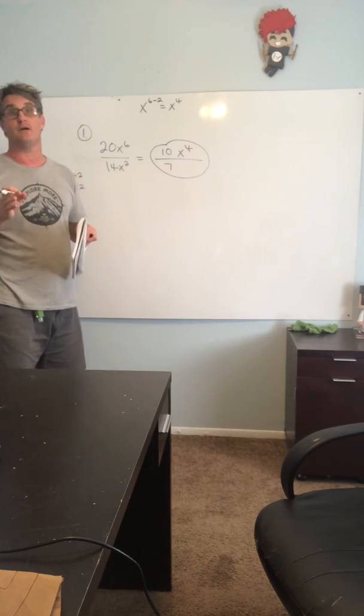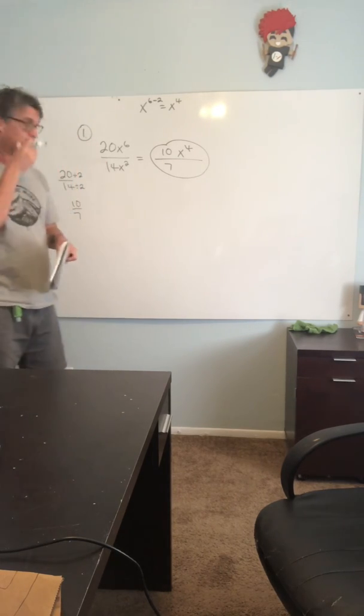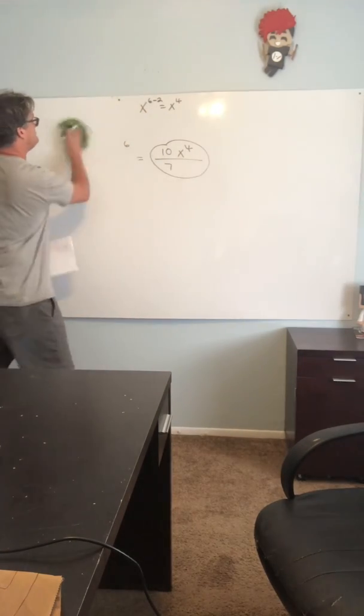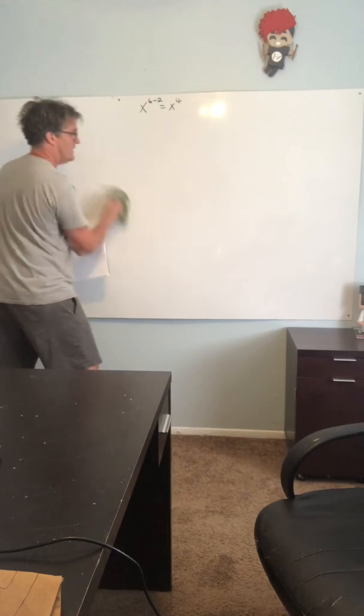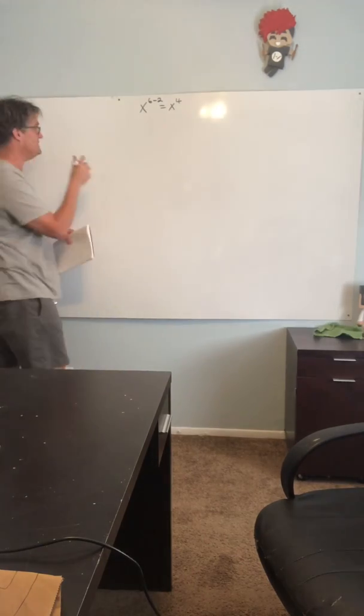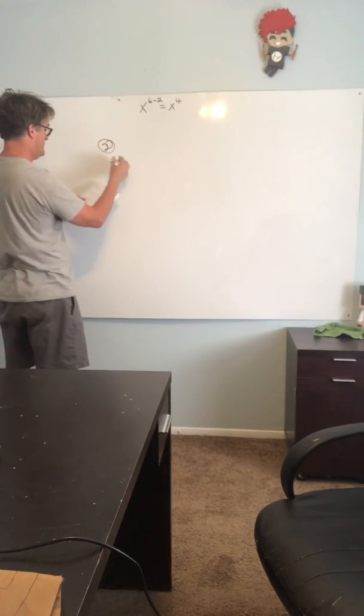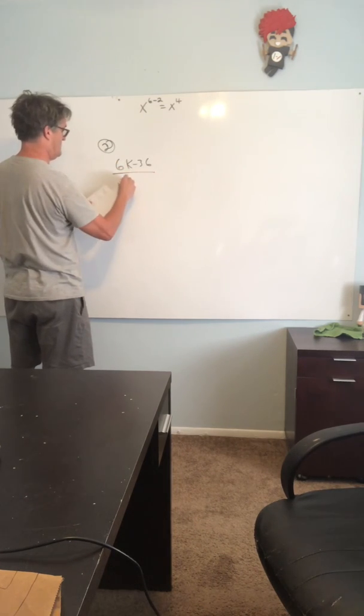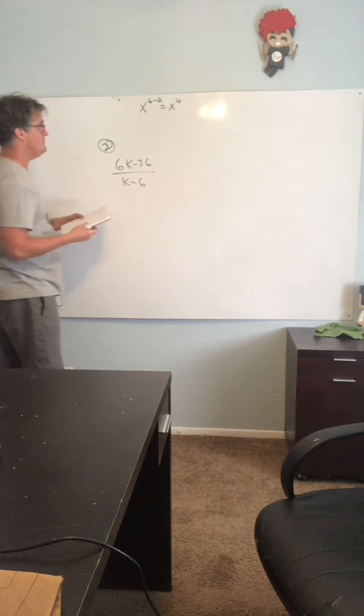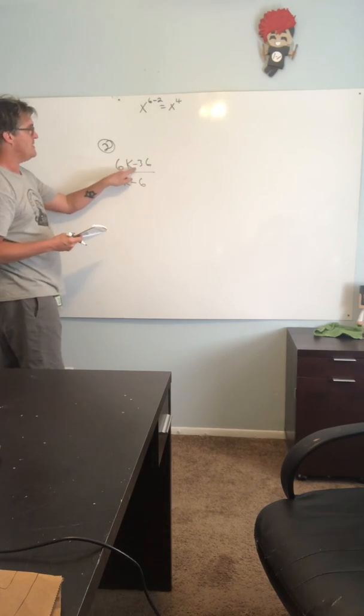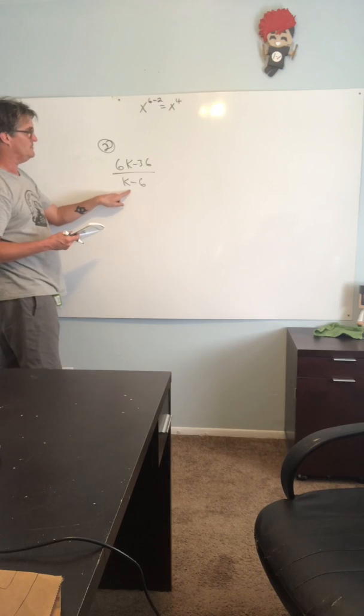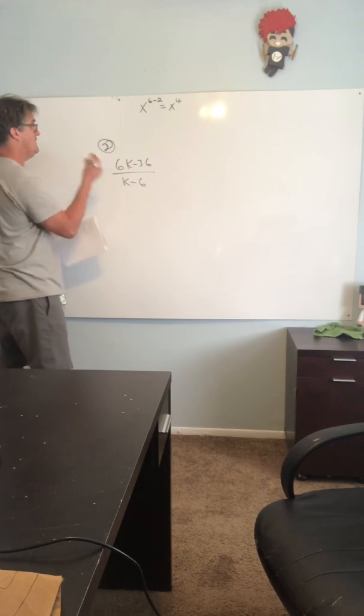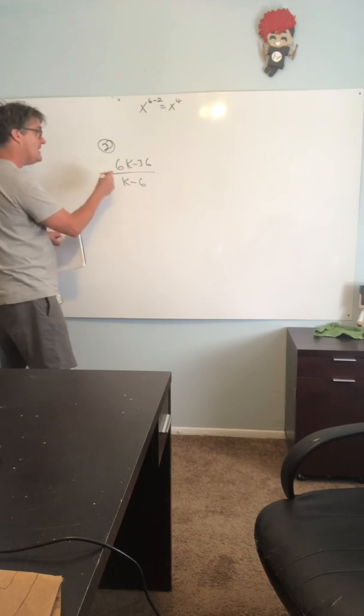And that is all you can do for example one. Notice there are no plus or minus signs, that's why you're able to cancel right away. Speaking of that, watch example two. Number two is going to be a little bit different. Number two over here: 6k minus 36 all over k minus 6. Notice you've got a binomial here, there's a minus sign separating those two terms. You got a binomial down here.